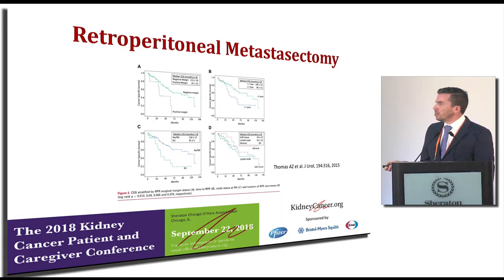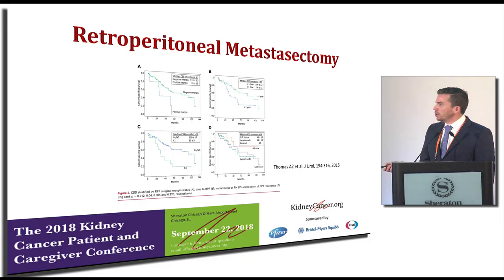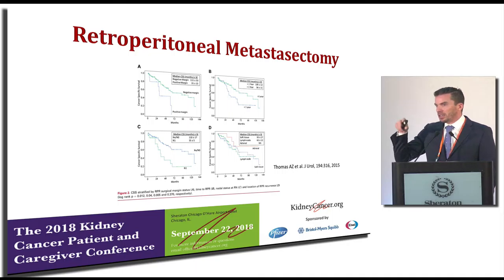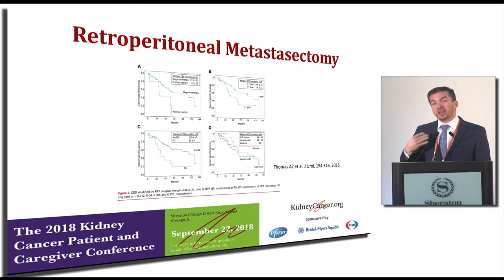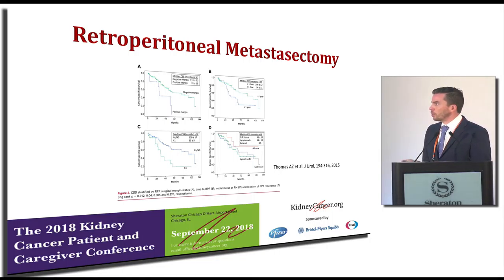Looking at where the cancer recurred: if it was in lymph nodes, patients did slightly worse than if the cancer had come back in the adrenal gland. The adrenal gland — that little gland that sits right on top of the kidney — is a more favorable location for these cancers to spread to.